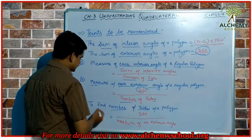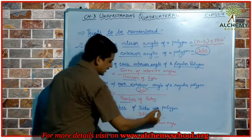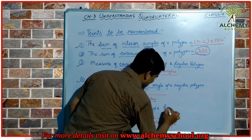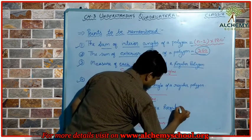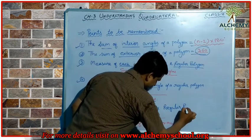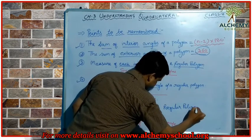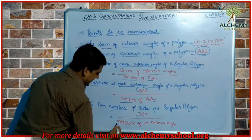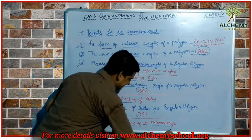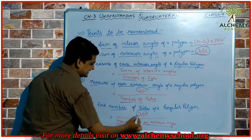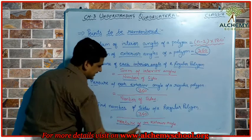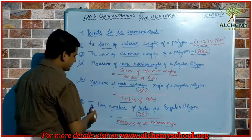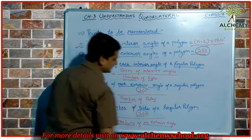To find the number of sides of a regular polygon, we divide 360 by the measure of an exterior angle. When we divide 360 by the measure of an exterior angle, we can find how many sides the polygon contains.